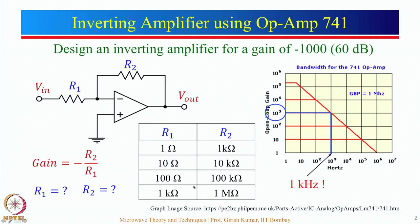There is another problem associated with the op-amp: the typical gain variation with frequency. You can see a peak gain of around 10^5, and then the gain is reducing. For a 741 op-amp, the gain-bandwidth product is 1 MHz. So if we design an amplifier for a gain of 1000, the corresponding frequency will be 1 kHz. This amplifier will only be useful to amplify signals up to 1 kHz.